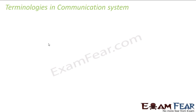It is very obvious that a communication system is not going to be as simple as just having a transmitter, a receiver and a channel. There are a couple of other things which play a very important role in communication systems, so we will quickly have a look at some of those important things.